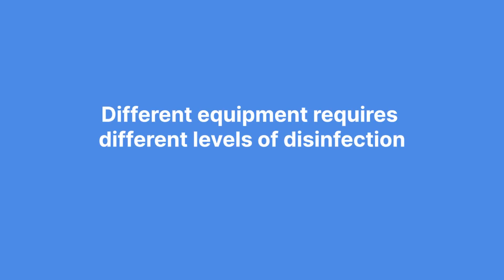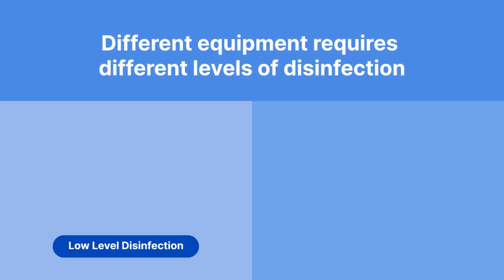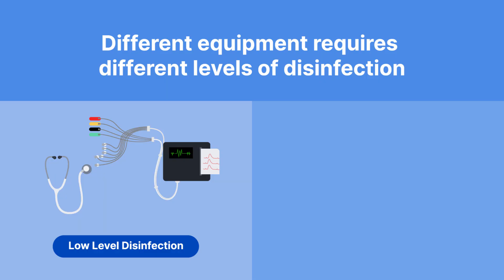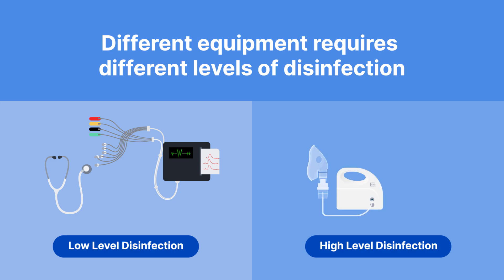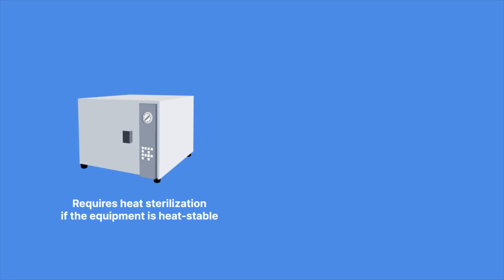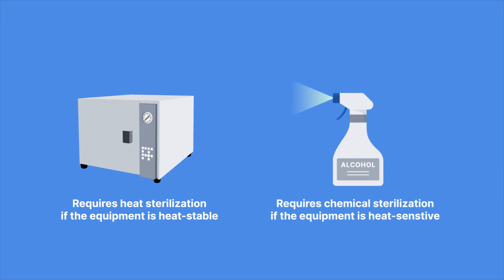Different equipment requires different levels of disinfection. Equipment that requires low-level disinfection, or just cleaning, includes blood pressure cuffs, stethoscopes, electrocardiogram leads, and environmental surfaces including the OR table. Equipment that requires high-level disinfection by heat or chemicals includes respiratory therapy and anesthetic equipment, flexible endoscopes, vaginal specula, reusable bedpans and urinals or urine bottles, and patient bowls. Equipment that requires sterilization — either by heat if heat-stable, or by chemical if heat-sensitive — includes surgical instruments, implants, prostheses and devices, urinary catheters, cardiac catheters, needles and syringes, dressings, sutures, delivery sets, dental instruments, rigid bronchoscopes, and cystoscopes.